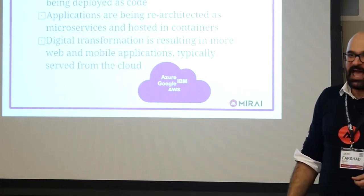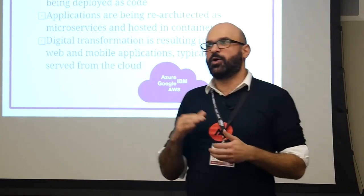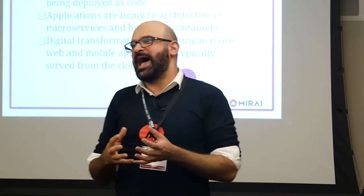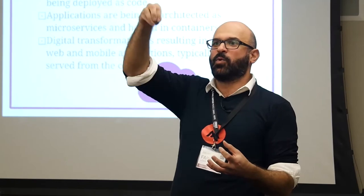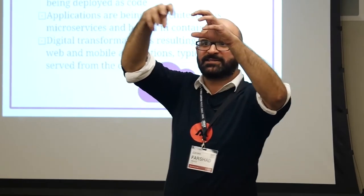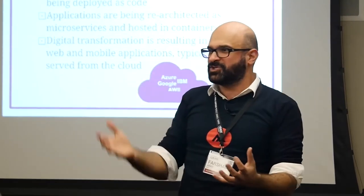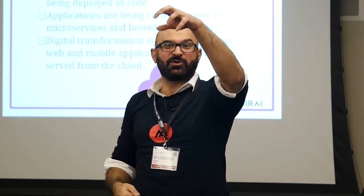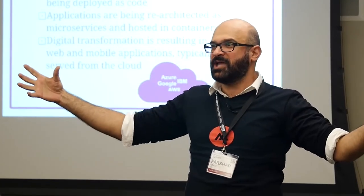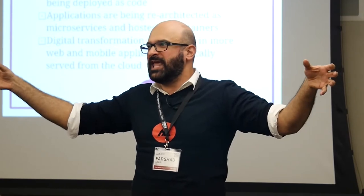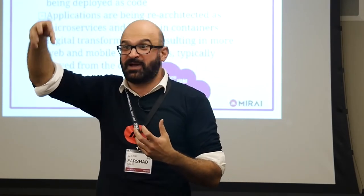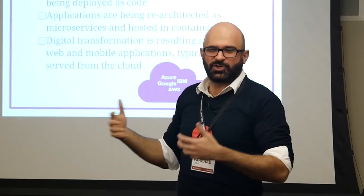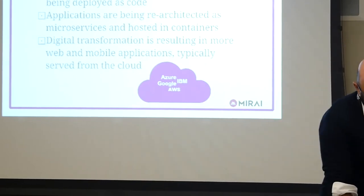In summary, digital transformation is resulting in more web and mobile applications typically served from the cloud, which brings a whole new way of thinking about security. In the past, a monolithic application had one entry point — you protected authentication there and users could roam freely inside. Now with an application broken into six pieces, you need to think about where the gateway is, how you control access to each service — do you need an API gateway to enforce security policies across your modernized microservices and API world?